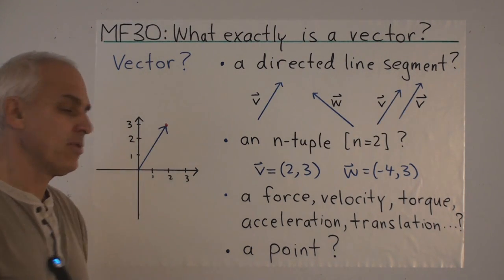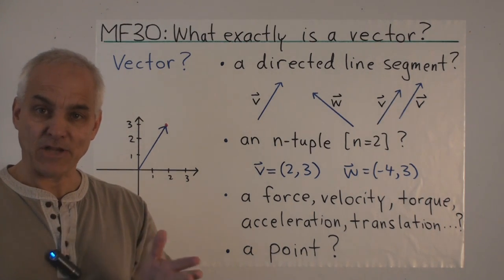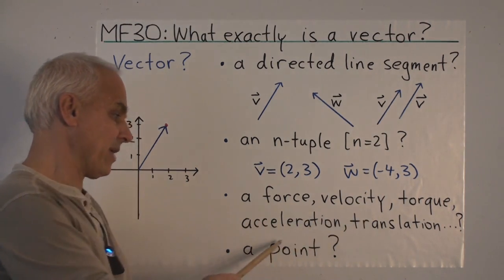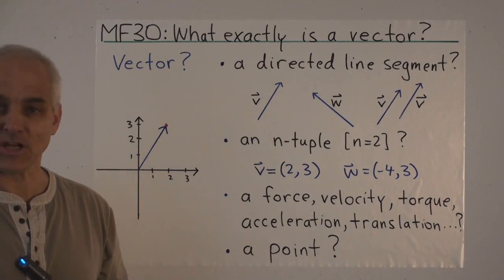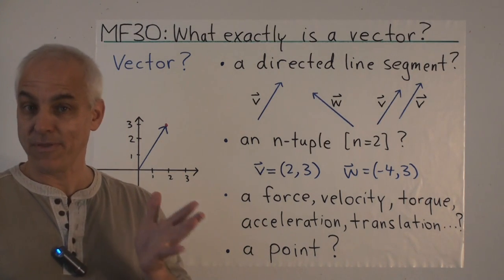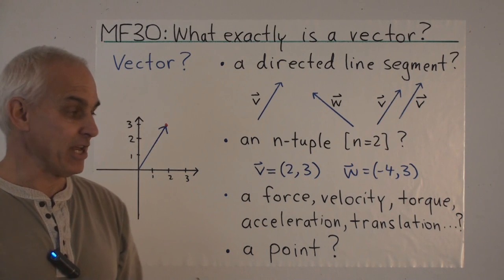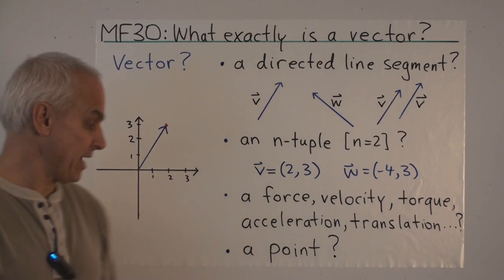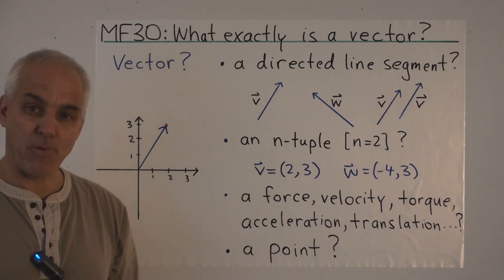Another idea is to connect it with physical quantities that are naturally in vector form. Things like force, velocity, torque, acceleration, or even translation. These are all physical things that are naturally represented by vectors. And another approach is to say that, well, a vector is really just like a point.